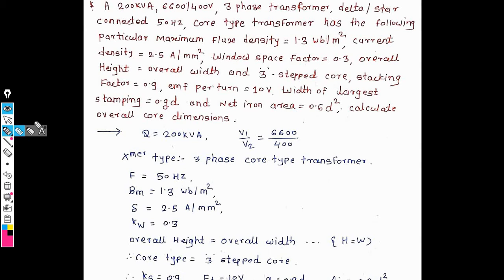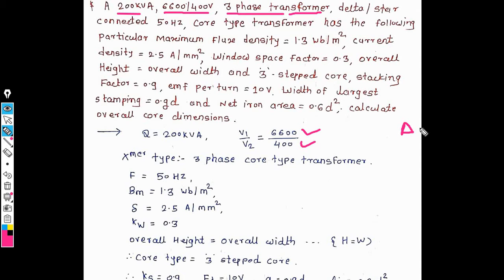This problem is based on a three-phase transformer. A 200 kVA step-down transformer with voltage rating V1 (input) and V2 (output), using delta-star winding — primary winding is delta and secondary winding is star — connected at 50 Hz. It is a core-type transformer with maximum flux density Bm = 1.3 Weber per meter square and current density sigma = 2.5 Ampere per mm square. Window space factor Kw = 0.3.